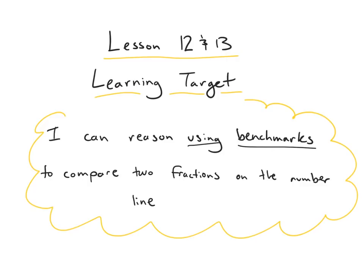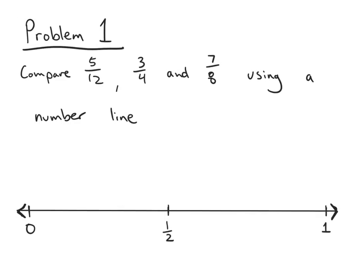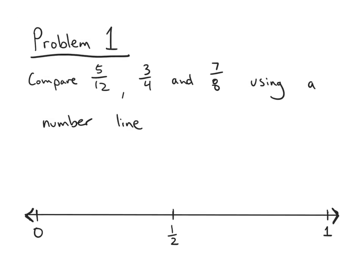Let's jump into our first problem. In problem one, I'm going to show how you would compare these three fractions — 5 twelfths, 3 fourths, and 7 eighths — using a number line. I already have a number line set up below and I have already included a few benchmarks: 0, 1 half, and 1.